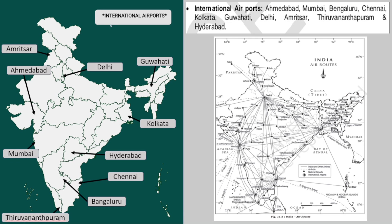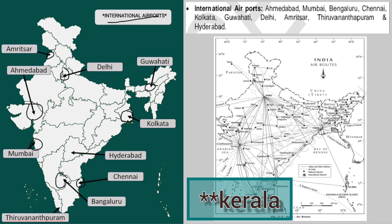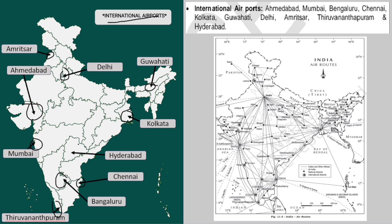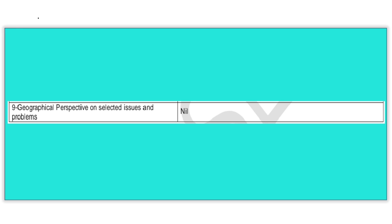Next is International Airports. Ahmedabad is in Gujarat, Mumbai is in Maharashtra, Bangalore is in Karnataka, Chennai is in Tamil Nadu, Kolkata is in West Bengal, Guwahati is in Assam, Delhi is in Delhi, Amritsar is in Punjab, Thiruvananthapuram is in Kerala, and Hyderabad is in Telangana. The questions on International Airports won't go beyond this — we just need to know which city and airport is in which state.